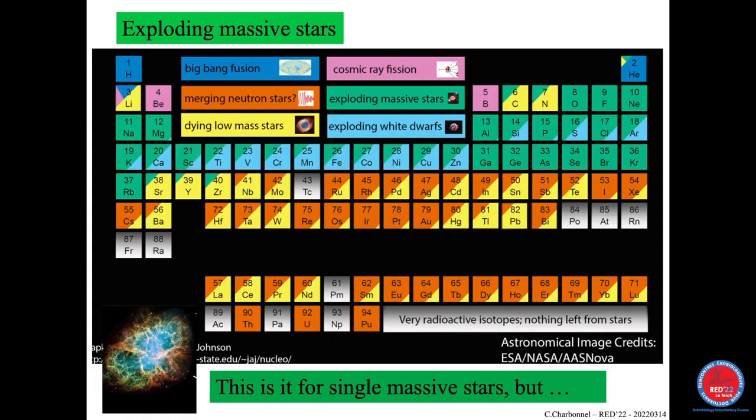Nitrogen is also the same thing, but it's due to hydrogen burning — CNO makes a lot of nitrogen. So this is the way through the thermal pulses that you will enrich the envelope, and then the interstellar material for this nitrogen. But what was made at the center stays in the center. And because of neutron capture on iron peak elements that were there when the star was born, you are actually able to make heavier elements.